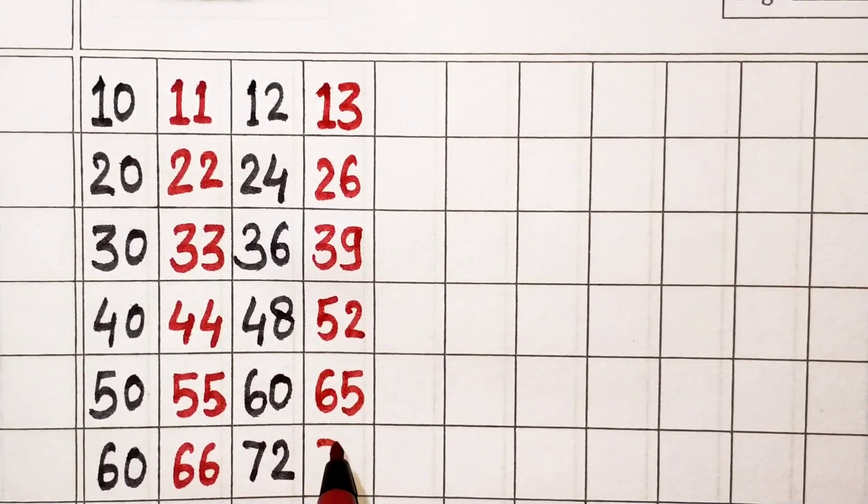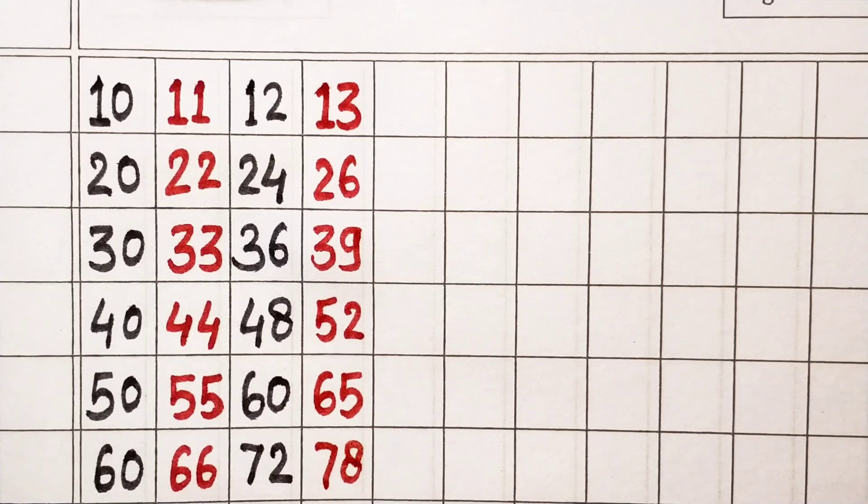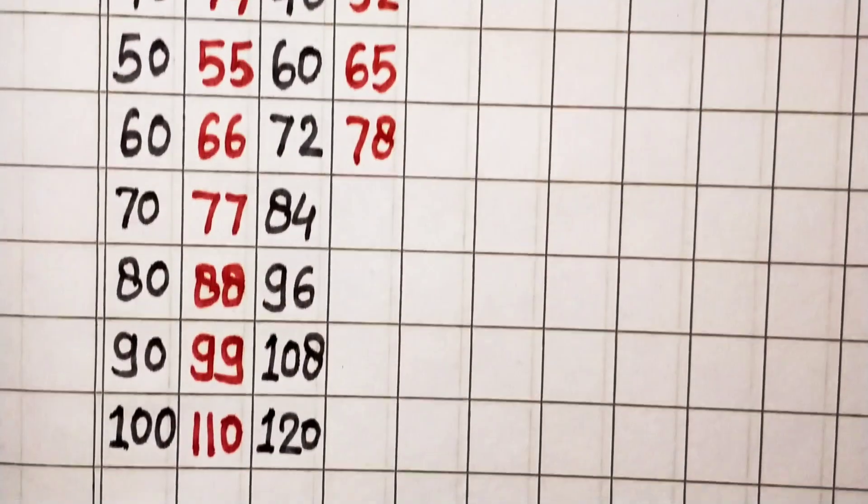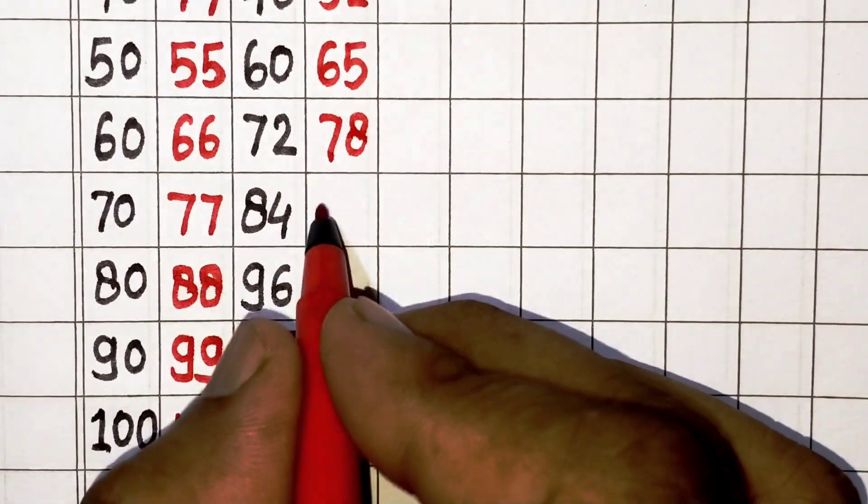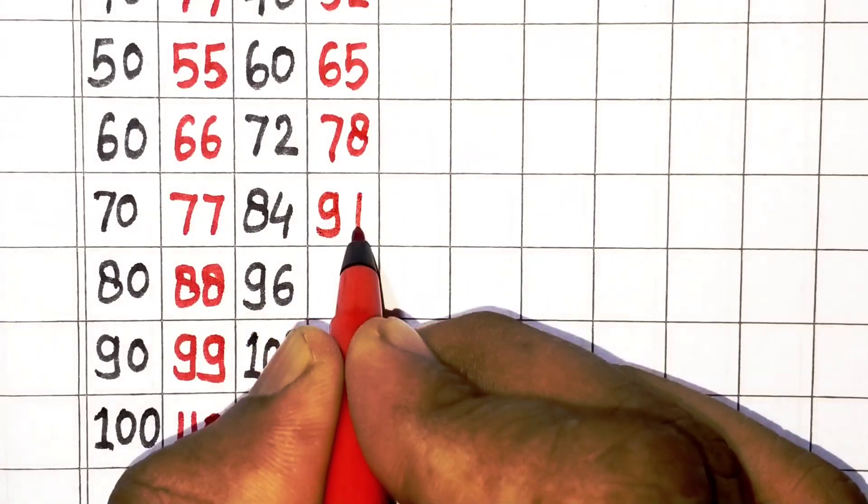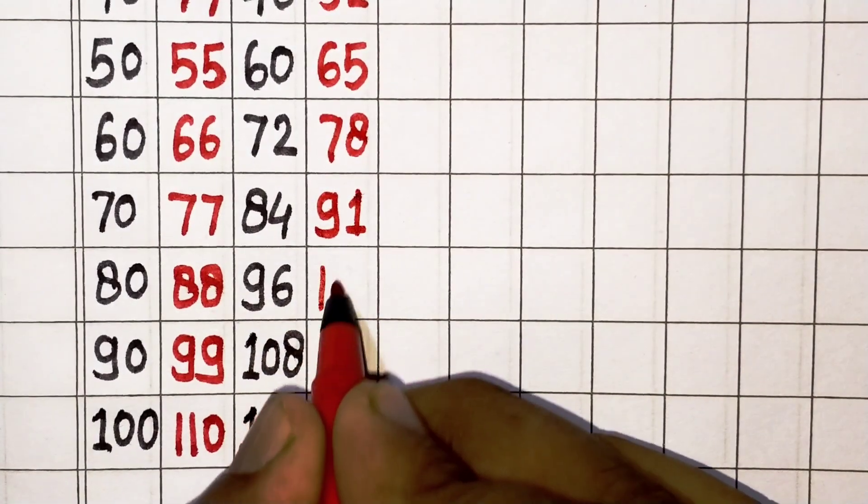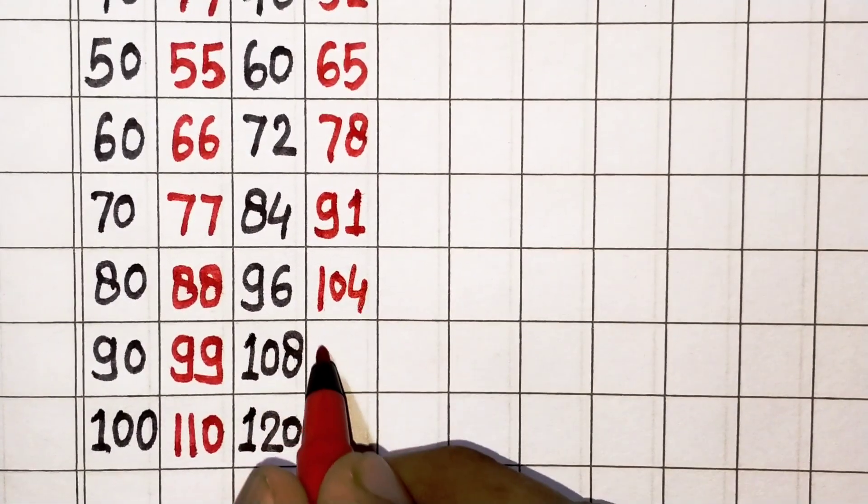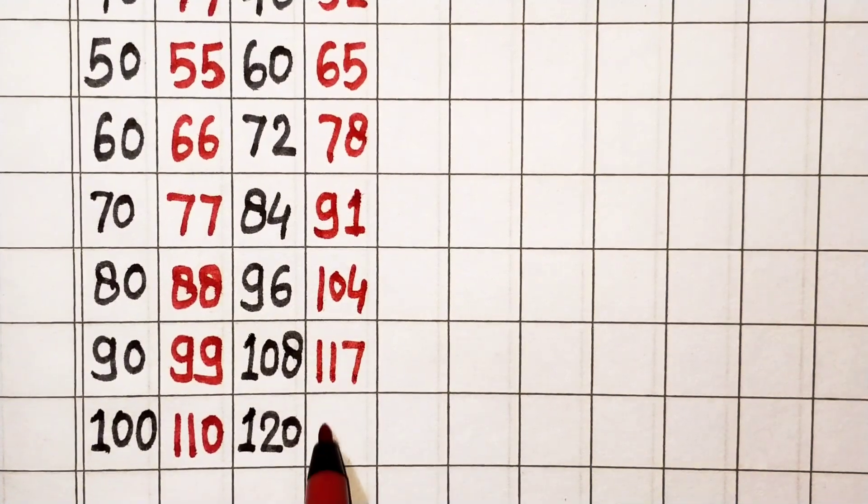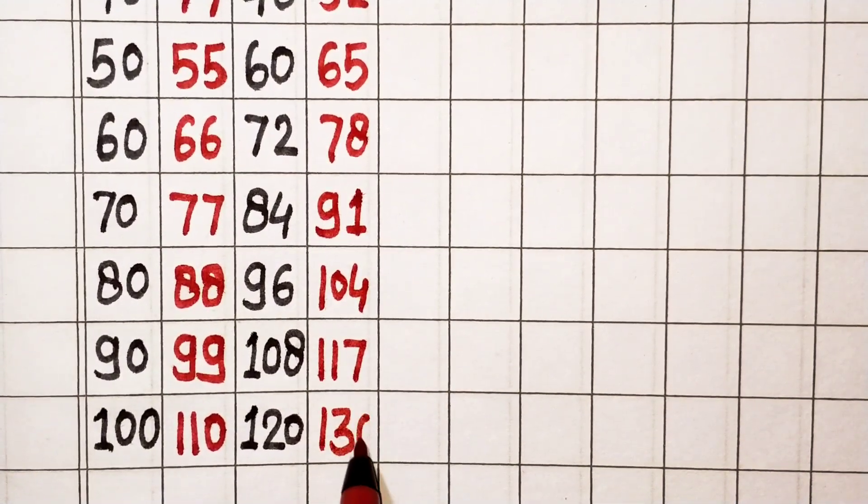13 times 6 is 78, 13 times 7 is 91, 13 times 8 is 104, 13 times 9 is 117, 13 times 10 is 130.